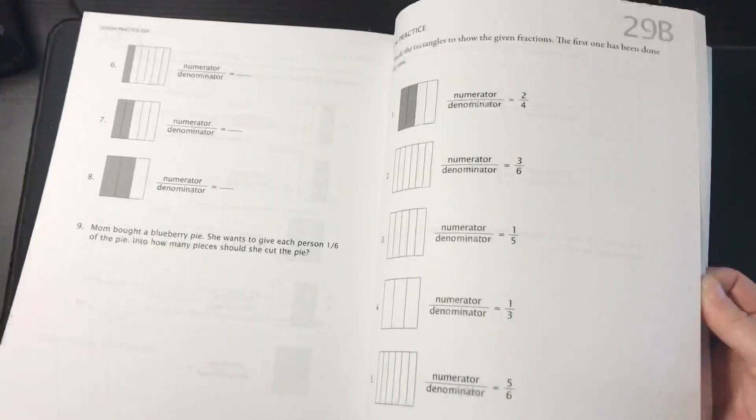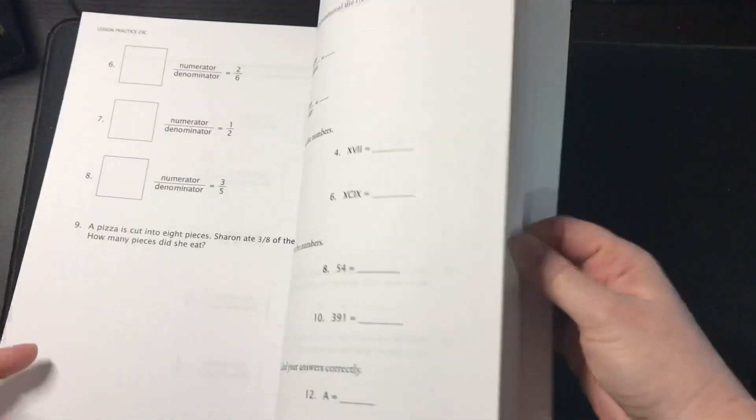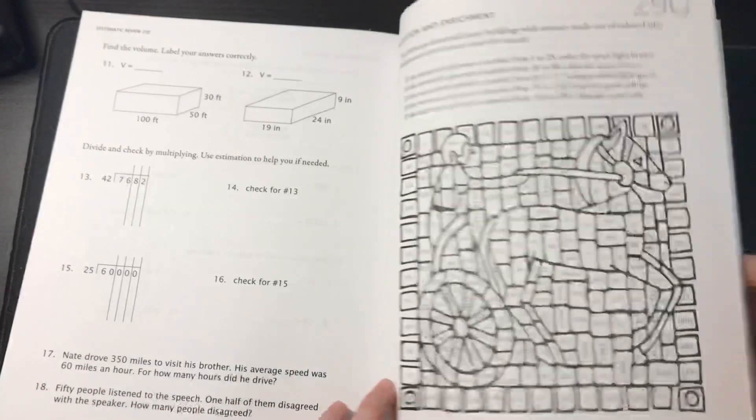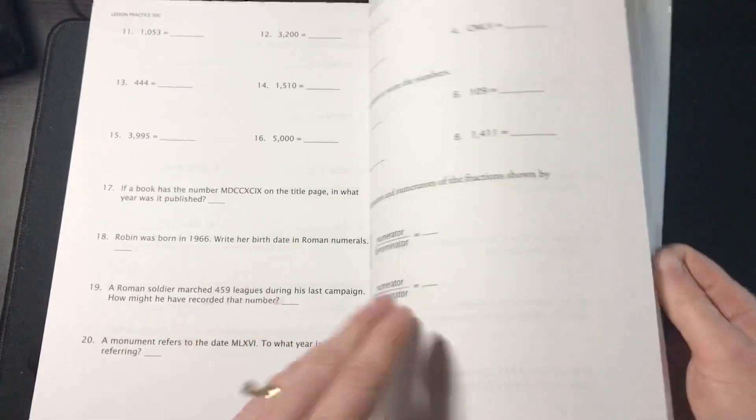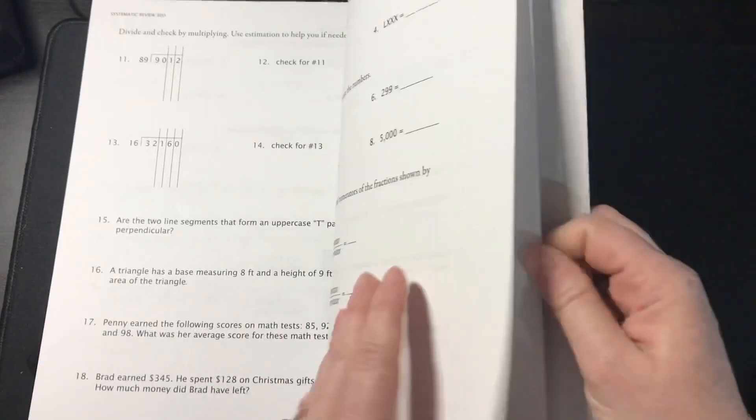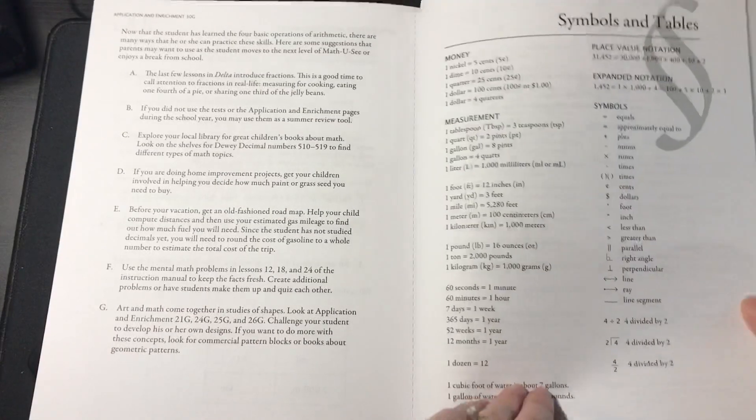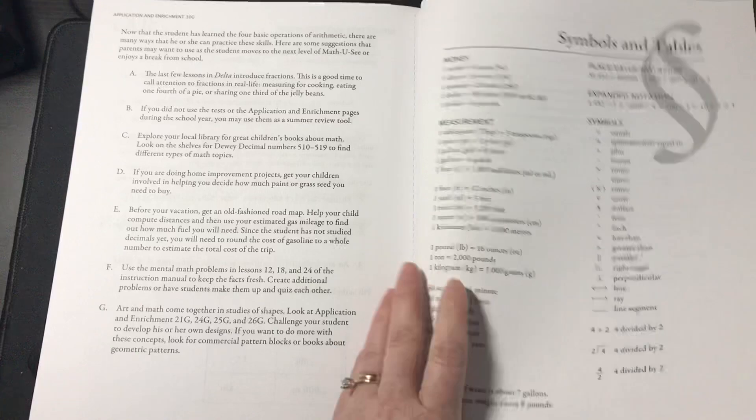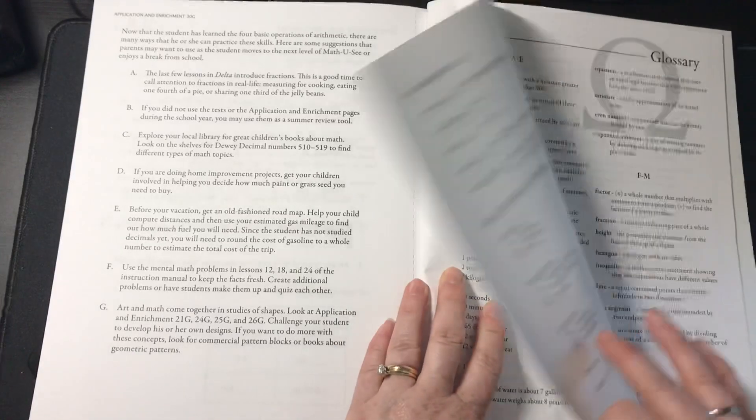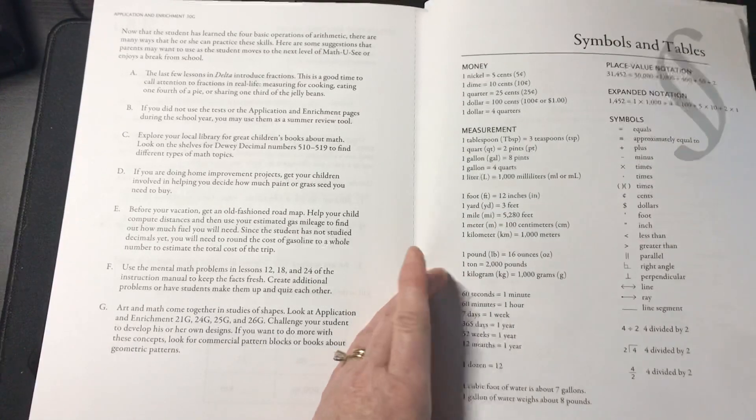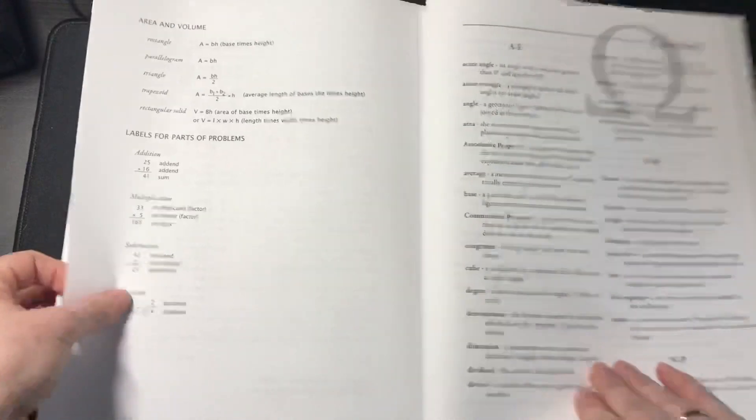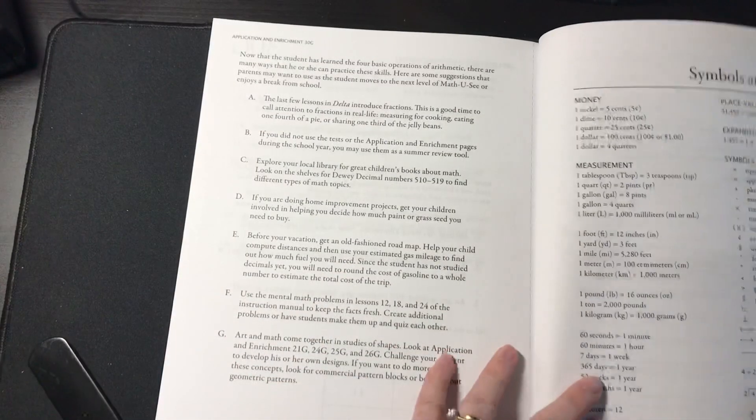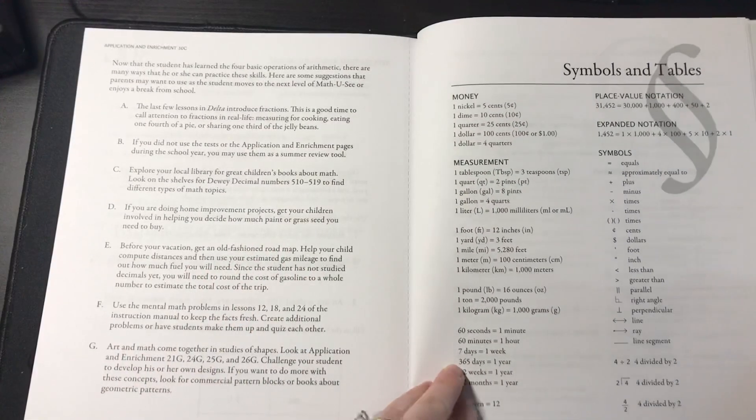Math-U-See does teach multiplication in a different way than most programs do. Math-U-See always has word problems, too. So you will find word problems in every lesson. And another key feature of Math-U-See, which we've utilized this page so much, is the symbols and tables. We definitely use this all throughout Gamma, and I'm sure it will be utilized in Delta.